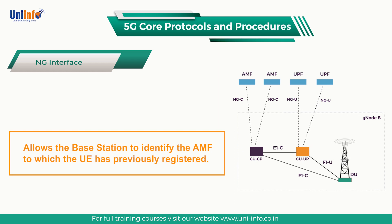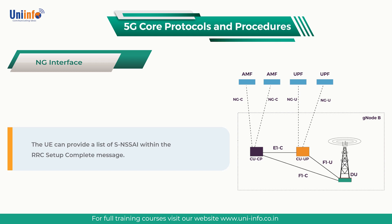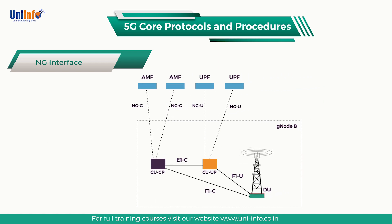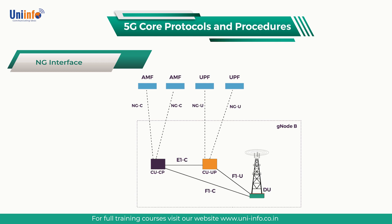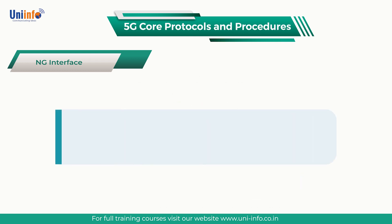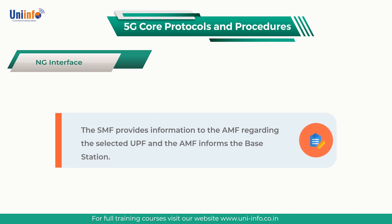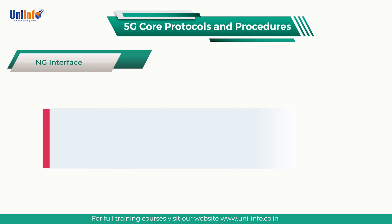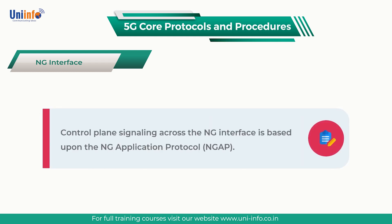If the 5G S-TMSI is not provided, the base station can use network slicing information from the RRC setup complete message — that is, the UE can provide a list of S-NSSAI within the RRC setup complete message. A single base station can be connected to one or more UPF. The SMF is responsible for selecting an appropriate UPF during the setup of a PDU session. The selection algorithm can account for UPF load, geographic location, network slicing, supported features, and PDU session type (i.e., IPv4, IPv6, Ethernet, or unstructured). Load information can help the SMF balance network load across multiple UPF. The SMF provides information to the AMF regarding the selected UPF, and the AMF informs the base station. Control plane signaling across the NG interface is based upon the NG application protocol, i.e., NGAP.